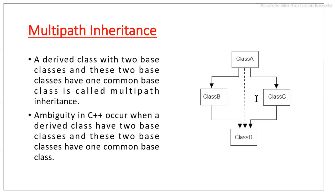In the previous video lectures we discussed single, multiple, multilevel, hierarchical, and hybrid inheritance. In the case of multipath inheritance, a derived class has two base classes, and these two base classes have one common base class.